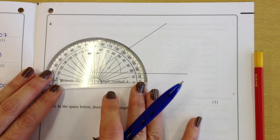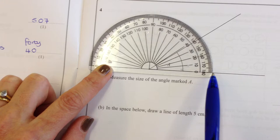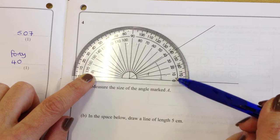Make sure that the protractor is exactly on the edge of the point, and the line is covered by the line on the protractor. OK, so we're reading from this scale, because the 0 has to be on the line. Up to here, and that would be 38 degrees.